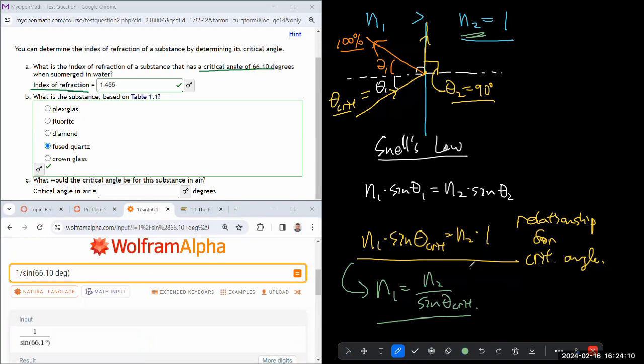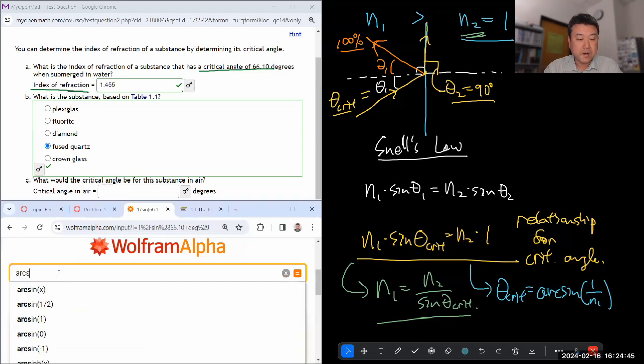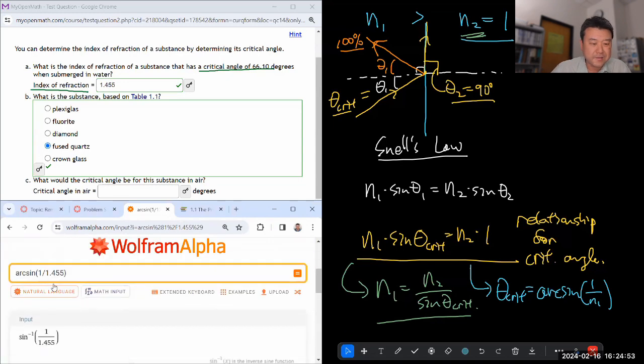And solve this, this time, instead for critical angle. So theta critical would be okay. The right-hand side, 1 divided by n1, and then arc sine. So it'll be arc sine of 1, because n2 is now 1 divided by n1. And we have n1 from our previous answer, 1.455. So we can do arc sine of 1 divided by 1.455. And there are ways to do this calculation more exactly. I think this is good enough.